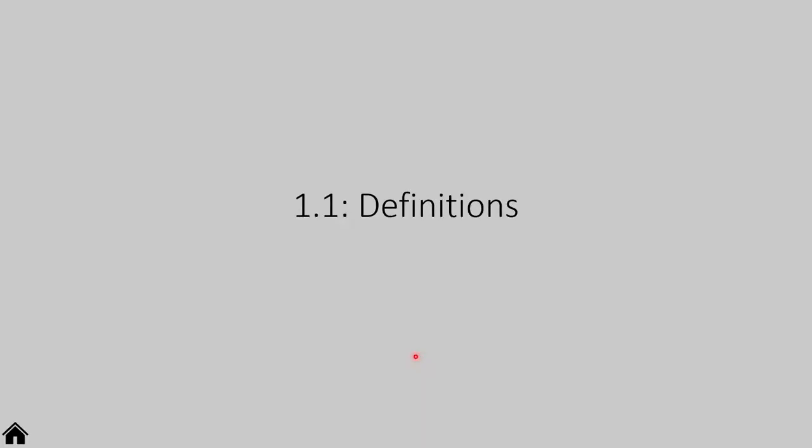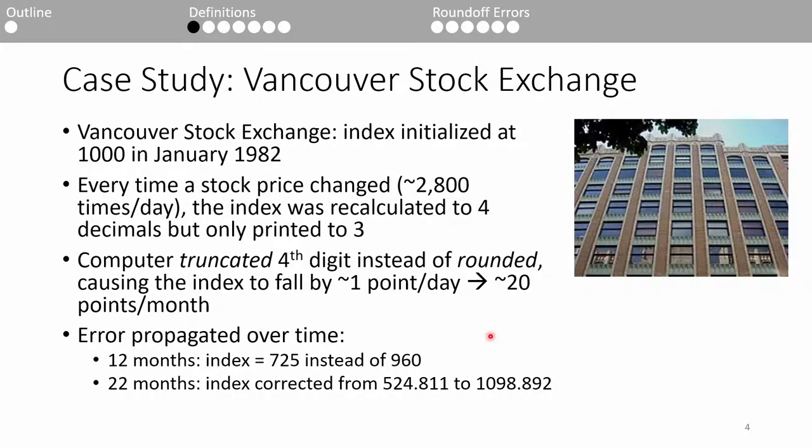Let's get started with a case study to emphasize why understanding errors is important. In 1982, the now-defunct Vancouver Stock Exchange initialized their index at 1000. The index is a number that helps investors compare current stock prices with past stock prices. It's proportional to the selling price of each stock, so economists use the index to assess market performance. In 1982, the Vancouver Stock Exchange housed about 1,400 individual stocks. Every time a stock price changed, which happened about 2,800 times on an average day, a computer recalculated the index to four decimal places, but only reported it to three.